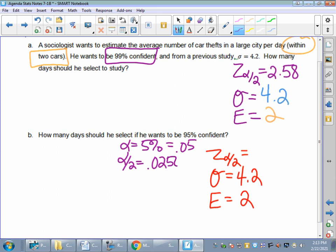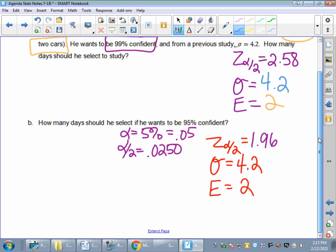So my alpha over two is 0.0250. So when I look that one up, I'm pretty sure that one comes out exact. I think that's a 1.96 for my Z. A little note to self, whenever we're doing these problems, if you just want to write down a list of all of your Z values, like 99% confident means my Z value is going to be 2.58. 95 means it's going to be 1.96.